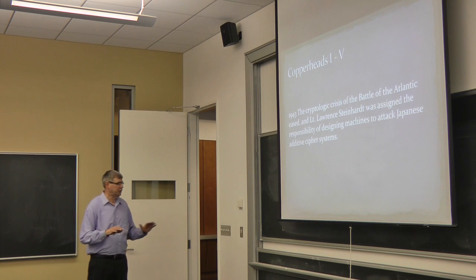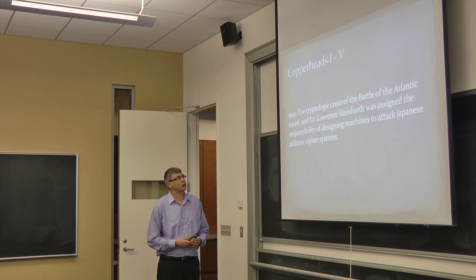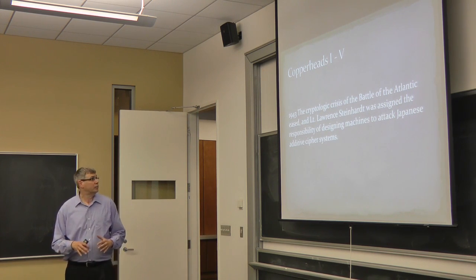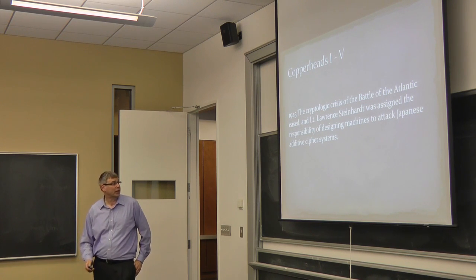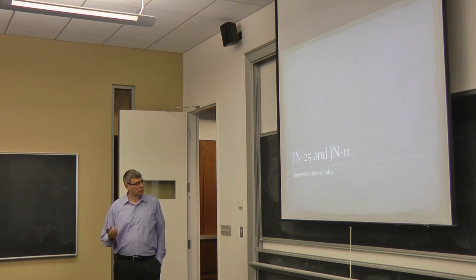The information he provided to Admiral Nimitz allowed Nimitz to station his carriers in an ambush for the Japanese carriers that were attacking Midway. And all four of the Japanese carriers were sunk. And in 1943, JN-25 information was responsible for the shoot down of the plane carrying Admiral Yamamoto. But as we got to the end of 1943, Lieutenant Lawrence Steinhardt, one of the Navy mathematicians, was given the task of designing machines to break the Japanese additive ciphers.